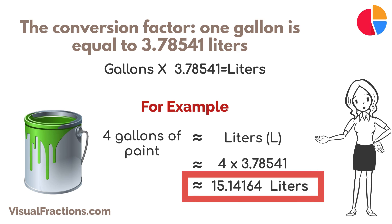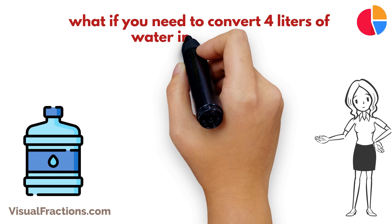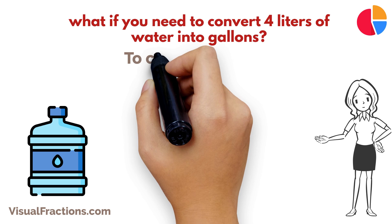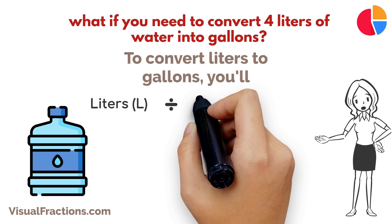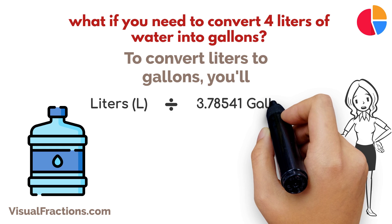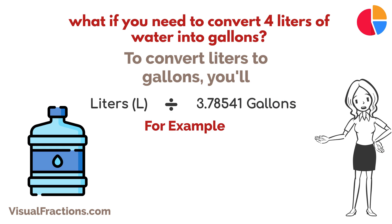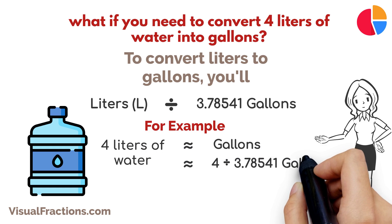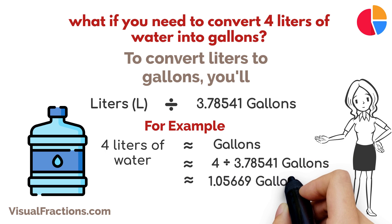But what if you need to convert four liters of water into gallons? Not to worry, we've got you covered. To convert liters to gallons, you'll divide the number of liters by the conversion factor of 3.78541. For example, if you have four liters of water, dividing by 3.78541 gives approximately 1.05669 gallons.